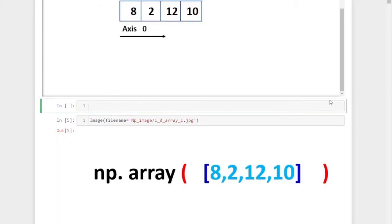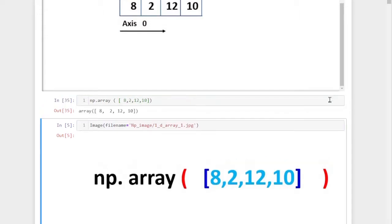Let's have a look at how to create that in an actual NumPy library. The command is np.array, open the parentheses, and within the list we are entering the numbers 8, 2, 12, and 10. This is how we create a NumPy array in the NumPy library.